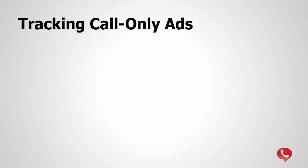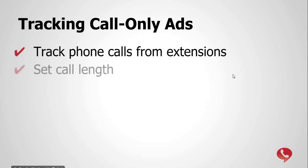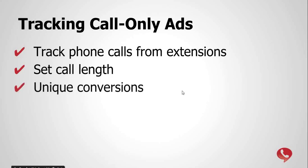I want to make sure everyone knows how to track call-only ads — it's key to campaign success. You're going to set up tracking from the call extension phone numbers within your ad text. Set the call length threshold: if a call converts after 90 seconds, only calls of 91 seconds or longer count as conversions. Set it up for unique conversions so repeat callers aren't tracked as conversions, which would lead to inaccurate results.